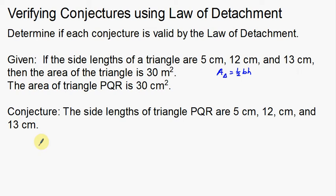When you think about it, the area of a triangle is one half base times height — you take the base, the height, multiply them together, and divide by 2. In that process they took the base and height, multiplied together, divided by 2, and got 30 centimeters squared for triangle PQR. So does that really mean the triangle has to have sides of 5, 12, and 13?